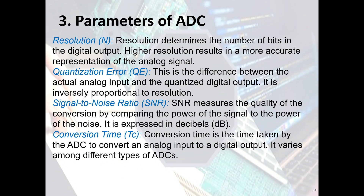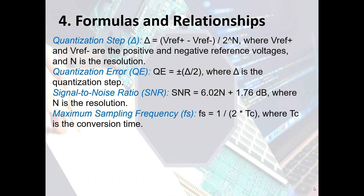Conversion time Tc is the time taken by the ADC to convert an analog input to a digital output. It varies among different ADC types. There is a trade-off: depending on your preference — whether the conversion needs to be fast or accurate — you adjust the resolution, but this affects conversion time.